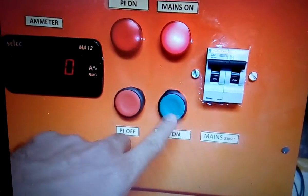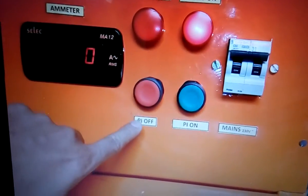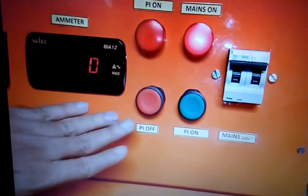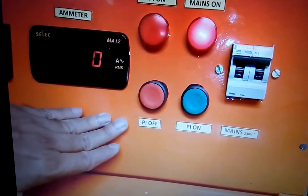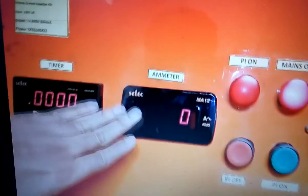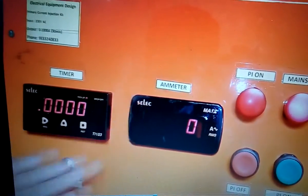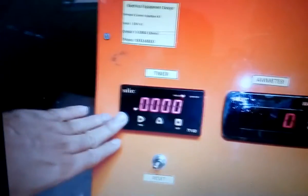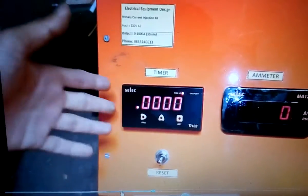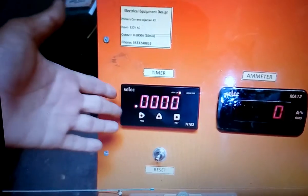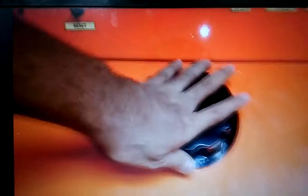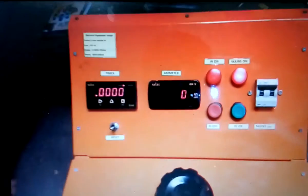This is PI on. Here you have to start the current injection procedure. This is PI off, so whenever you want you shut it off. And this is the ammeter. It will show what current is going through the apparatus. This is a timer. It will show you the time. This is a current controller. By varying the knob, you can vary the current from 0 to 1000 ampere in this case.